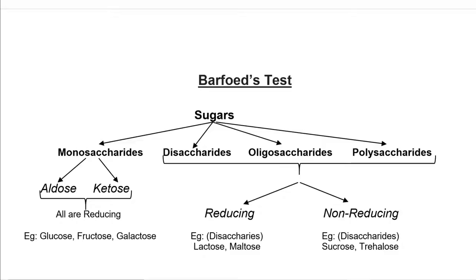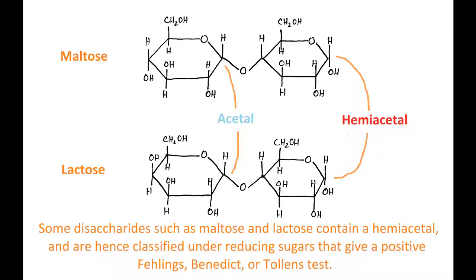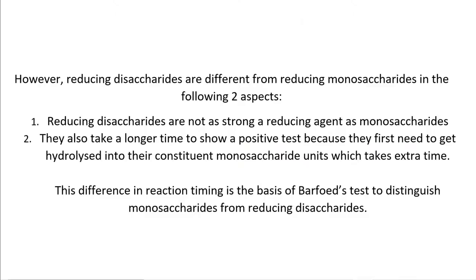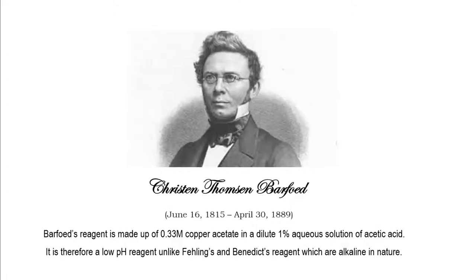Disaccharides are classified as reducing and non-reducing. A reducing disaccharide has a free hemiacetal group in one of the two constituent monosaccharides, which acts as the reducing sugar. This hemiacetal group, just like in the monosaccharides, is in equilibrium with an open chain aldehyde and can therefore act as a reducing agent. However, reducing disaccharides are not as strong a reducing agent as monosaccharides and take a longer time to show a positive test with Barfoed's reagent. This difference in reaction time is exploited in the Barfoed's test to help distinguish monosaccharides from reducing disaccharides.